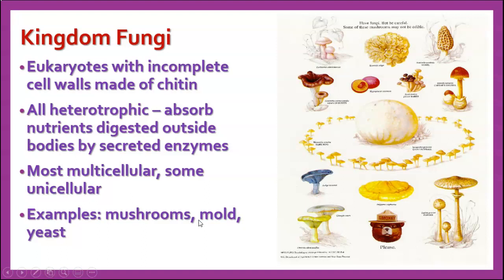Kingdom Fungi are eukaryotes with incomplete cell walls made of chitin. Incomplete cell walls means there is some connection between cells that allows their cytoplasm to go back and forth. Chitin — C-H-I-T-I-N, pronounced 'chitin' — is a polysaccharide substance found in the cell walls of fungi and also in the exoskeletons of arthropods like insects. All members are heterotrophic and mostly absorb nutrients digested outside their bodies by secreted enzymes. Most are multicellular; some unicellular ones like yeast exist. Examples: mushrooms, molds, puffballs, morels, yeast.